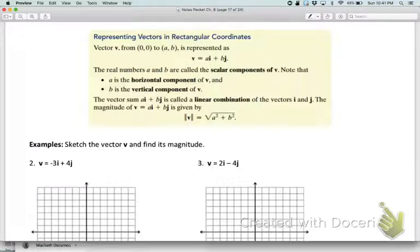Any vector v can be written as a times i plus b times j. a and b are called the scalar components of v. a is called the horizontal component because it goes along the x-axis, and b is called the vertical component.